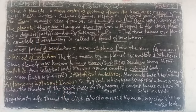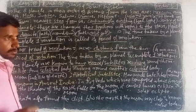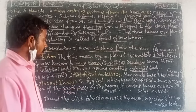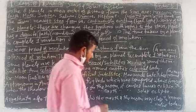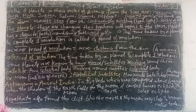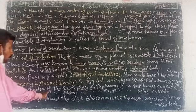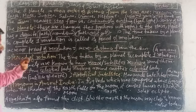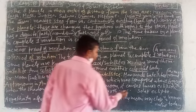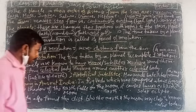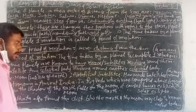Astronomy was studied in ancient India. One person who studied it was Aryabhatta. The Rig Veda was composed about 4000 years ago. Aryabhatta wrote about astronomy. He stated that when the shadow of the Earth falls on the Moon, it causes a lunar eclipse, and when the shadow of the Moon falls on the Earth, it causes a solar eclipse.